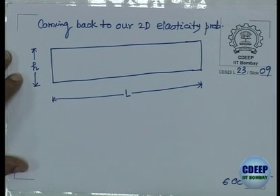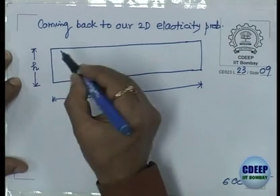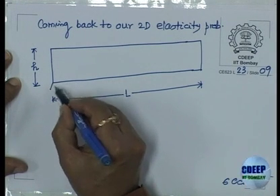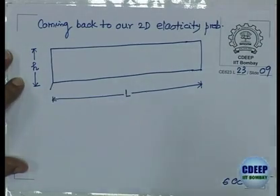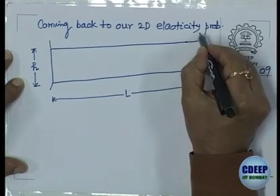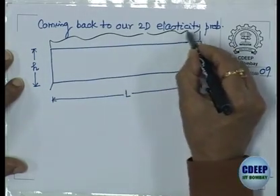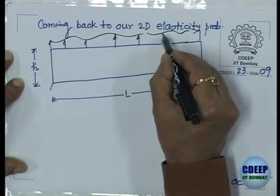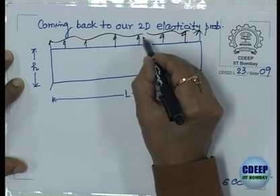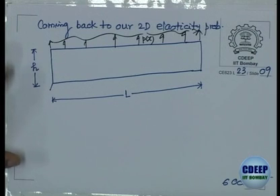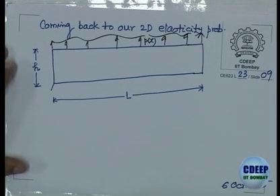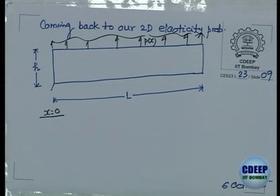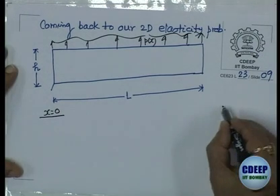I will reduce my dimension in the x direction by assuming a sine-cosine solution, and then do numerical integration in the z direction. Tomorrow morning I will finish that numerical integration. So, this is the point where we leave for now.